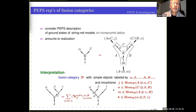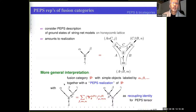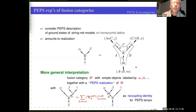There is a different interpretation: you can say that the labels alpha, beta, gamma correspond to simple objects of the fusion category, but there is something else — what I call the PEPS realization — such that I have an identity with the 6J symbol of the fusion category D appearing as a recoupling identity for the PEPS tensor, in the same way as I had a recoupling identity for the MPO fusion tensor before.